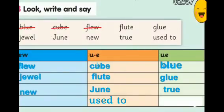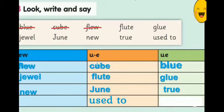Let's check your answers. In the first column, 'ew': jewel, new. In the second column, 'u-consonant-e': cube, flute, June, used to. In the third column, 'ue': blue, true.